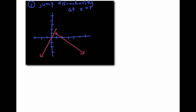One common kind of discontinuity is called a jump discontinuity. A function has a jump discontinuity if its graph separates into two pieces with a jump in between them. This particular function can be described as a piecewise defined function: f(x) equals 2x when x is less than or equal to one, and f(x) equals negative x plus two when x is greater than one.